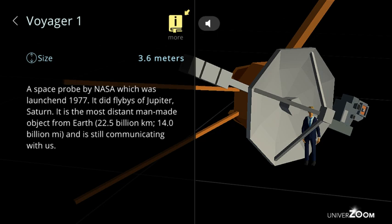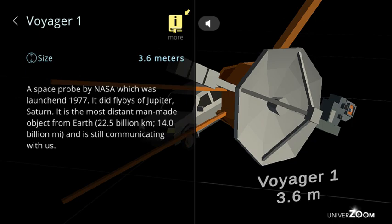Voyager 1 is a very small object from Earth, 22.5 billion kilometers, 14.0 billion miles, and is still communicating with us.